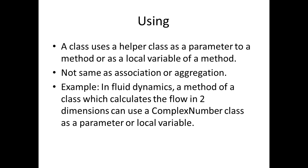In object-oriented notation, there is also a concept of using, where a class uses a helper class as a parameter of one of its methods or as a local variable. It is not the same as association or aggregation — there is no real relationship between the two in the business domain. For example, in fluid dynamics, a method that calculates flow in two dimensions may use a complex number class with a real part and imaginary part. That complex number just serves as a helper class with no real business-domain relationship.